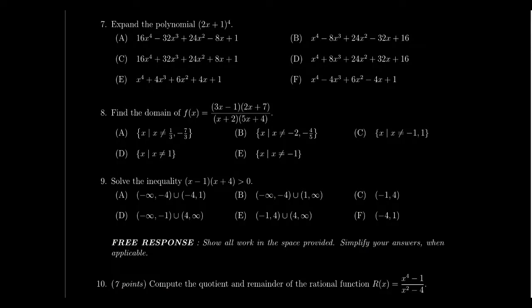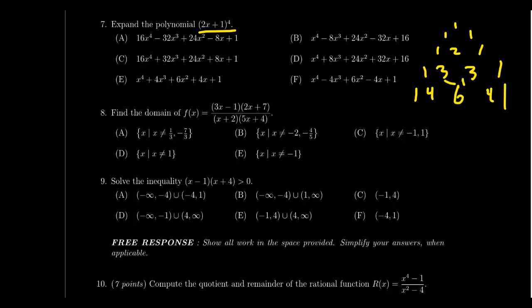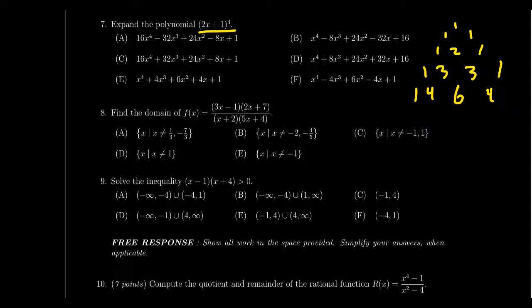Question seven is about the binomial theorem. Given something like (2x + 1)^4, you could multiply it out the hard way, but the binomial theorem is much faster. Compute the binomial coefficients using Pascal's triangle: the row for the 4th power is 1, 4, 6, 4, 1 — each entry the sum of the two above it. Pay attention to any coefficients inside the binomial (like the 2 in 2x) and to plus or minus signs. The binomial theorem was covered in lecture 29, section 4.6.